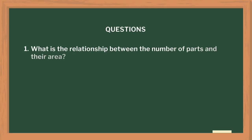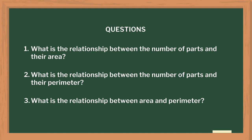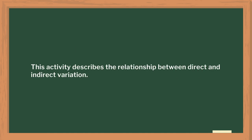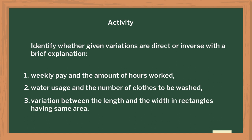I asked them: What is the relationship between the number of parts and its area? What is the relationship between the number of parts and its perimeter? And what is the relationship between area and perimeter? This describes the relationship between the types of variations. I concluded my class by taking a few examples in a rapid-fire quiz format. The students had to identify whether the variations described are direct or inverse.